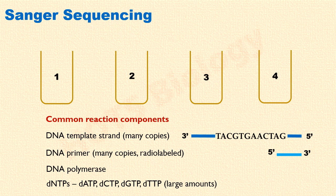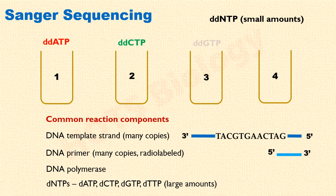Besides these common components, small amounts of one dideoxynucleotide or ddNTP is added in each reaction. This is the component which is different in each reaction. For our illustration, ddATP is added in the first reaction, ddCTP in the second, ddGTP in the third, and ddTTP in the fourth.